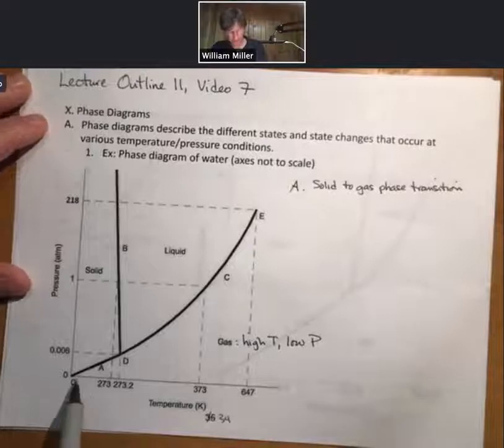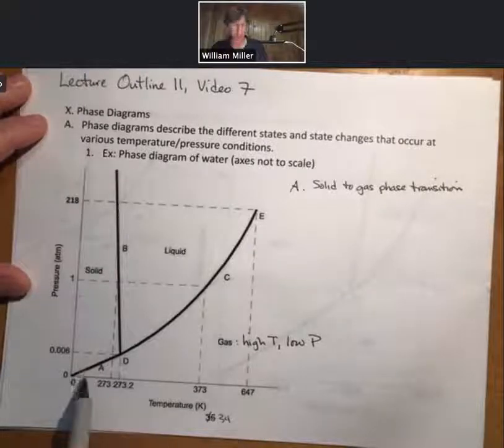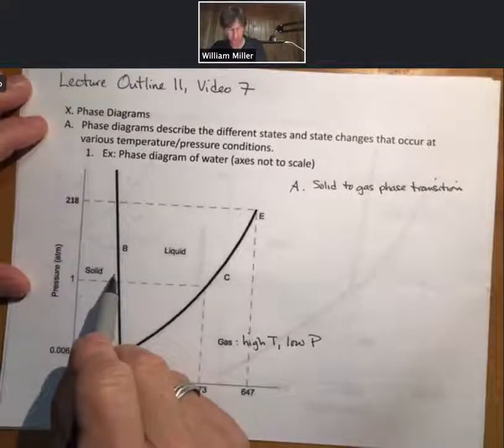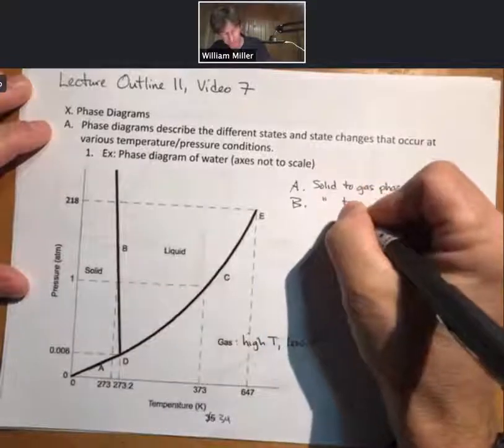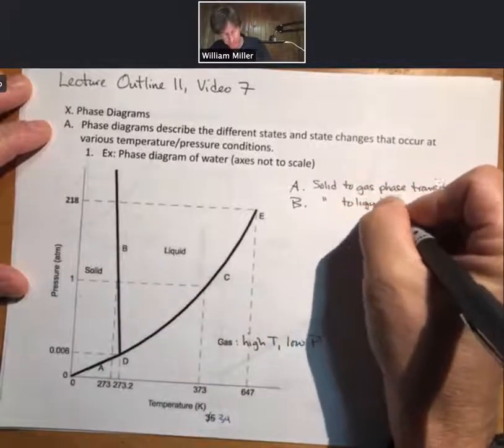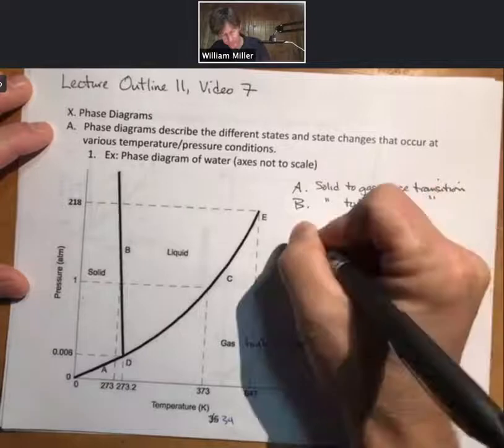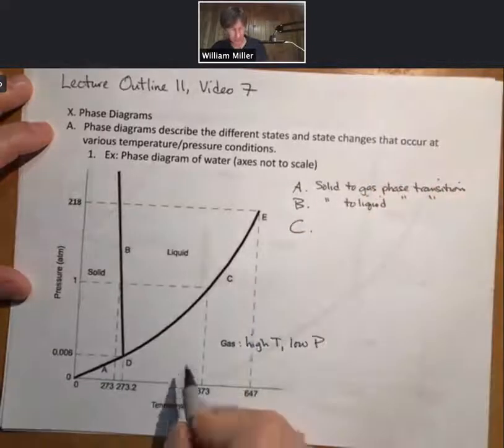And that it occurs at a range of pressures and temperatures. There is also line B, which is the same thing for solid to liquid transition, and C for liquid to gas.